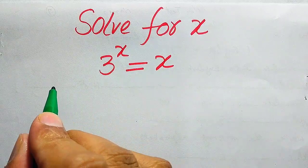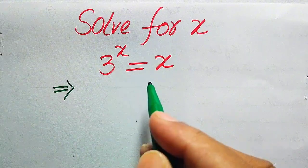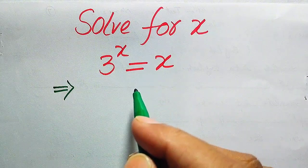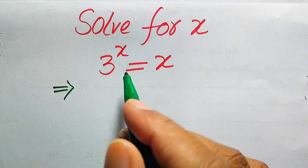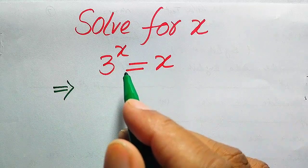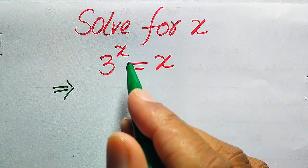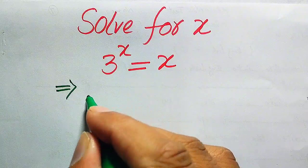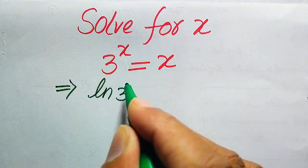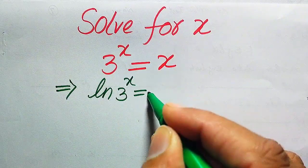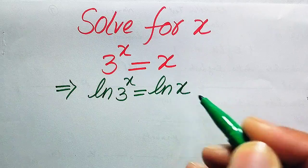Now we move towards the solution. This is an exponential equation and the variable appears in the exponent. In order to remove this variable from the exponent, we need to take the natural log on both sides, so it will be written in this form.